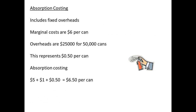With absorption costing we have to add in the overheads. We still have our $6 per can. We have overheads of $25,000 for 50,000 cans, which represents $0.50 per can. So our total for absorption costing becomes $6.50 per can. We can see this is a greater cost per can than marginal costing.